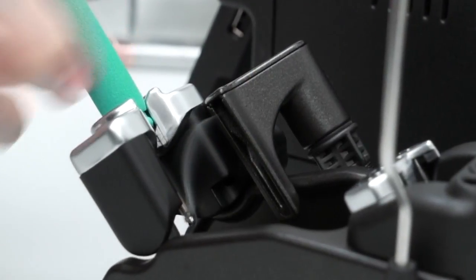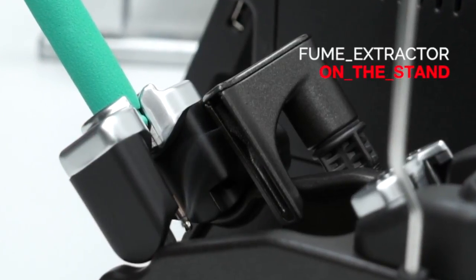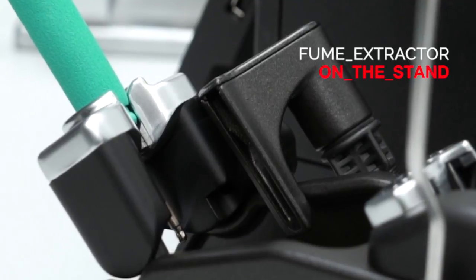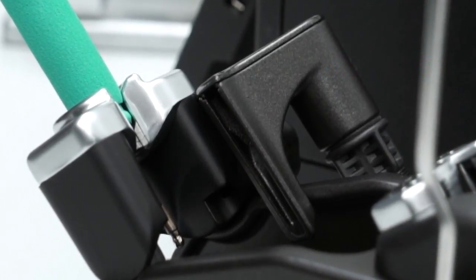JBC's fume extraction systems also include an aspiration duct on the stand that collects fumes and residual particles from the tip when the tool is placed back.